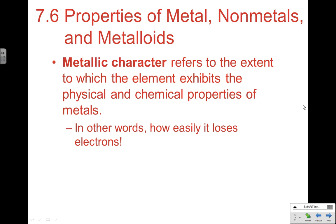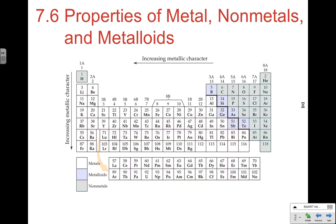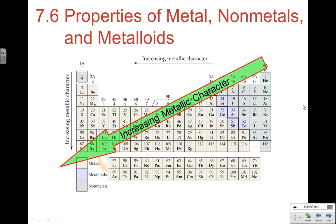When we look at the trends of metallic character on the periodic table, it increases down a column and decreases going right across a period. That means the most metallic substances are in the lower left-hand corner. Francium would be our most metallic substance on the periodic table, which means it's phenomenal at losing electrons.